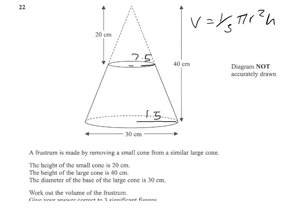So the large volume will be one-third of pi times 15 squared times the height of 40. The small cone will be one-third of pi times 7.5 squared times 20. Now, if I find the difference between the two, that will give me the volume of the frustum.